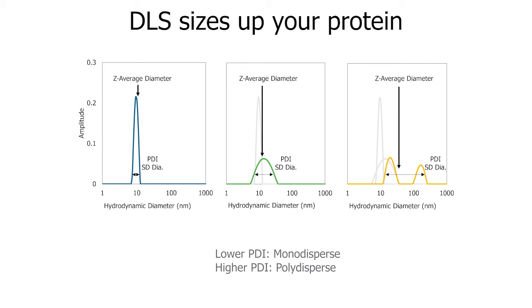Dynamic light scattering (DLS) is UNCLE's third detection method — a highly sensitive technique providing data on protein size and size distribution. Example data shows a monomeric sample in blue, a sample with some aggregation in green, and a sample with significant aggregation in yellow, with the x-axis on a log scale. The metrics reported from DLS are the z-average diameter, a weighted average of diameter, and a polydispersity index (PDI), a measure of the width of the size distribution. Looking left to right, we see an increasing trend in z-average diameter and widening size distributions, with temperature increasing from room temperature to the mid-70s.